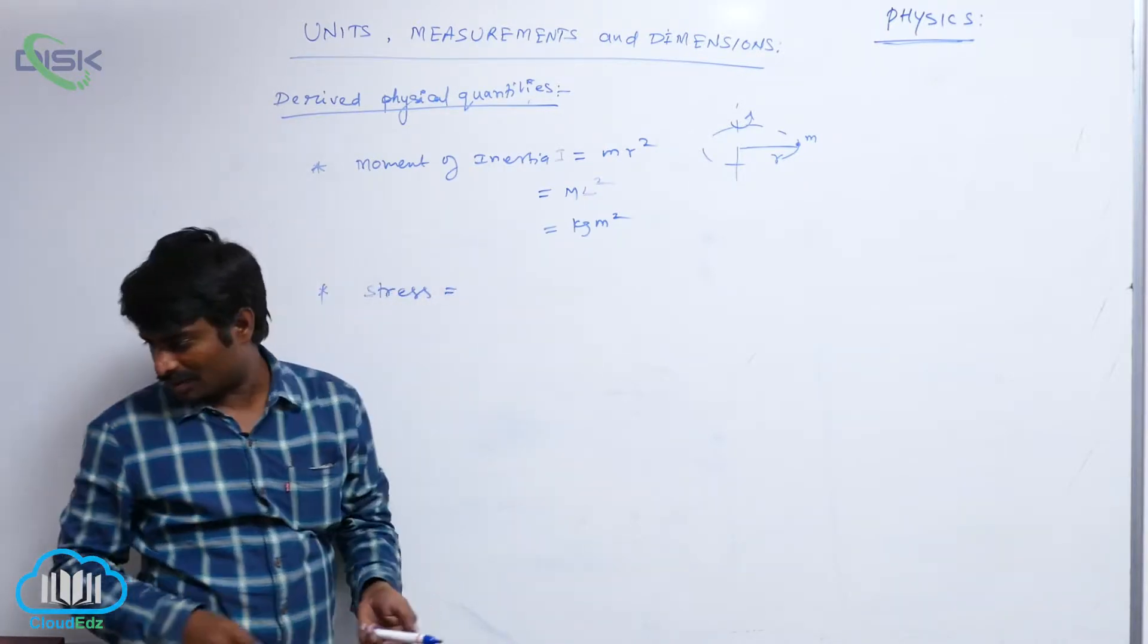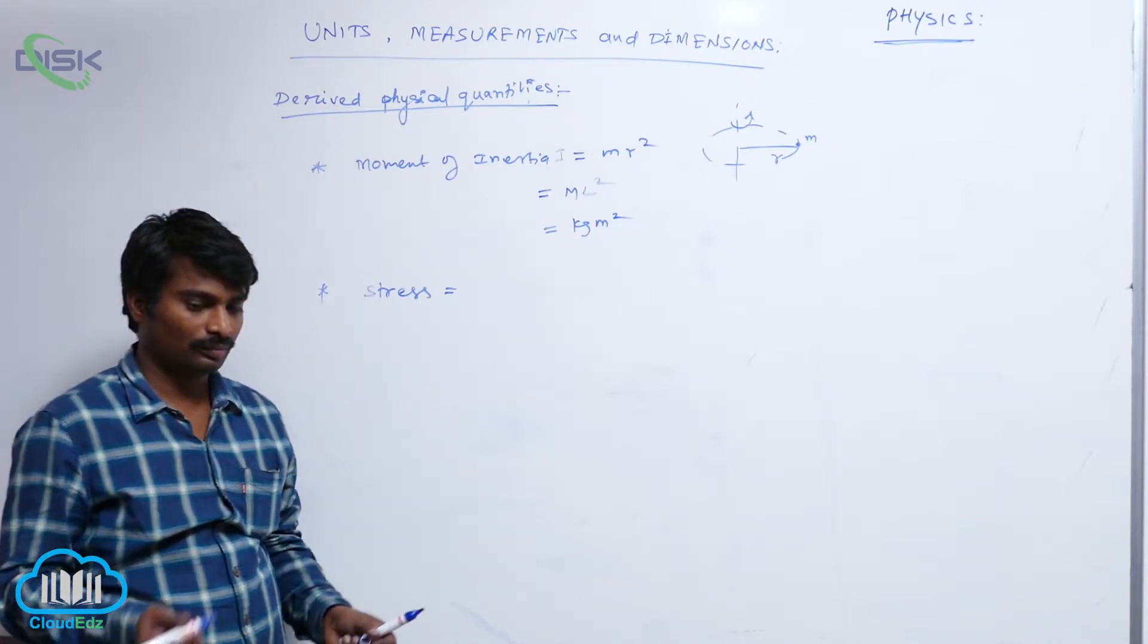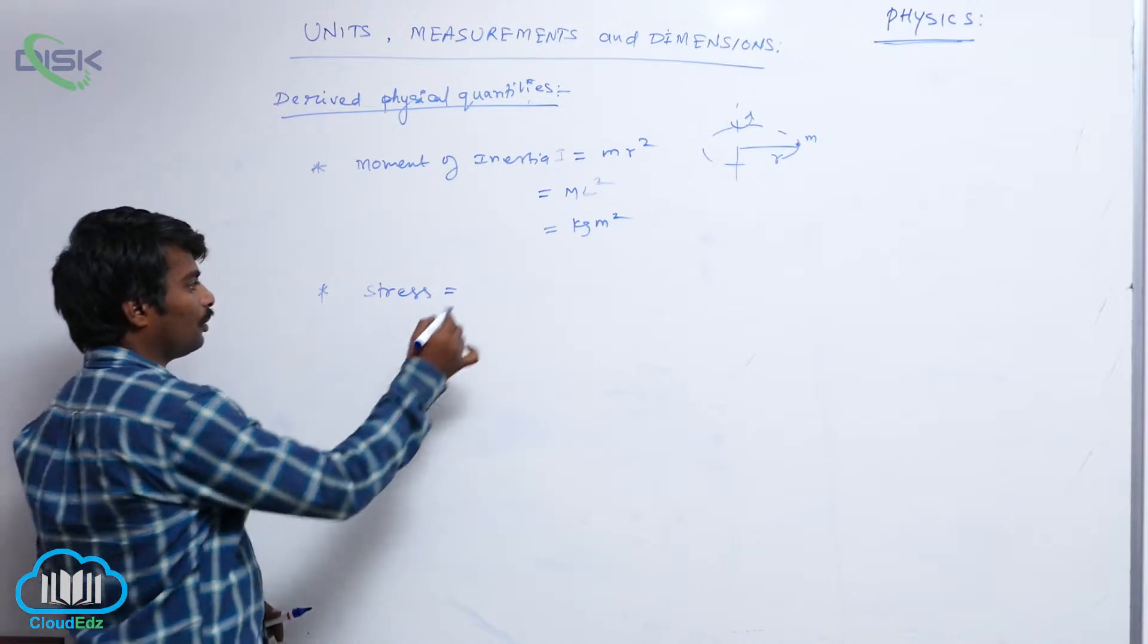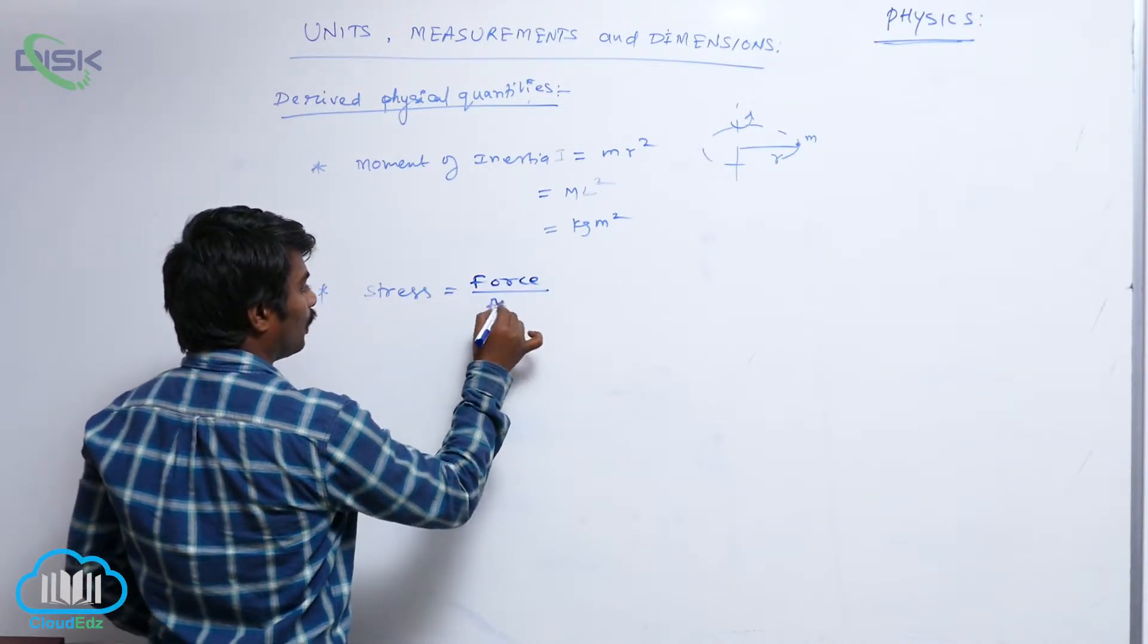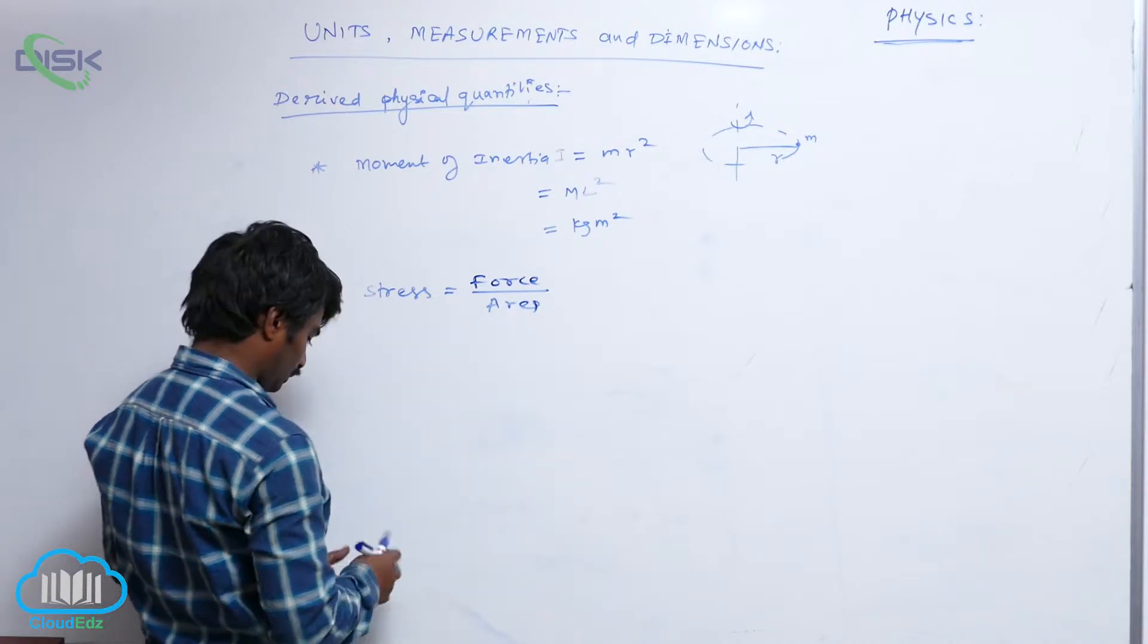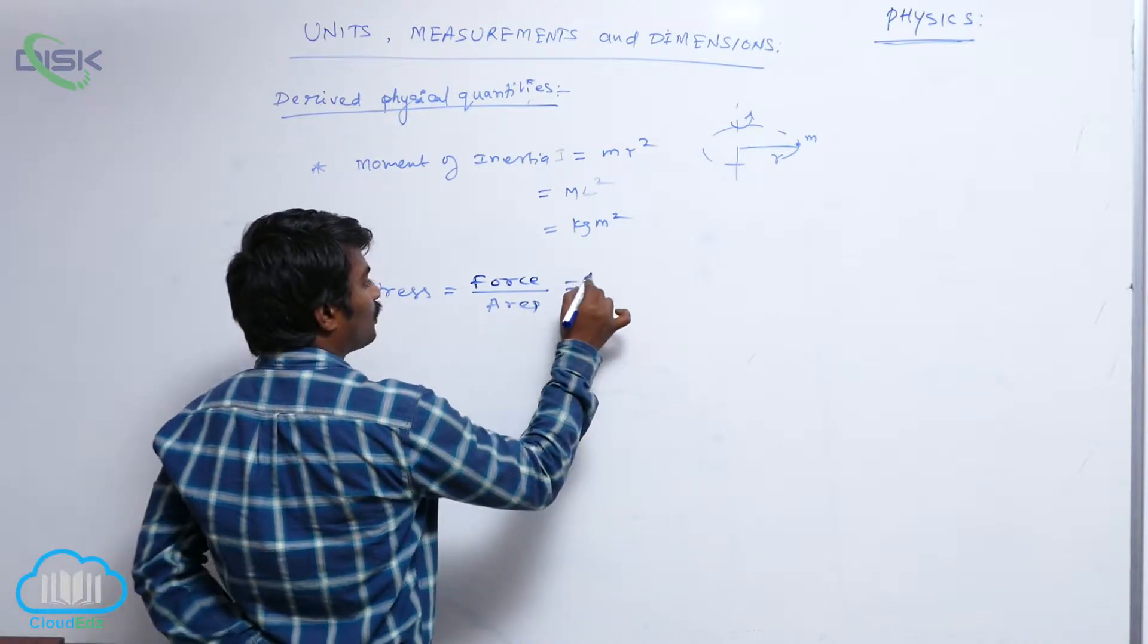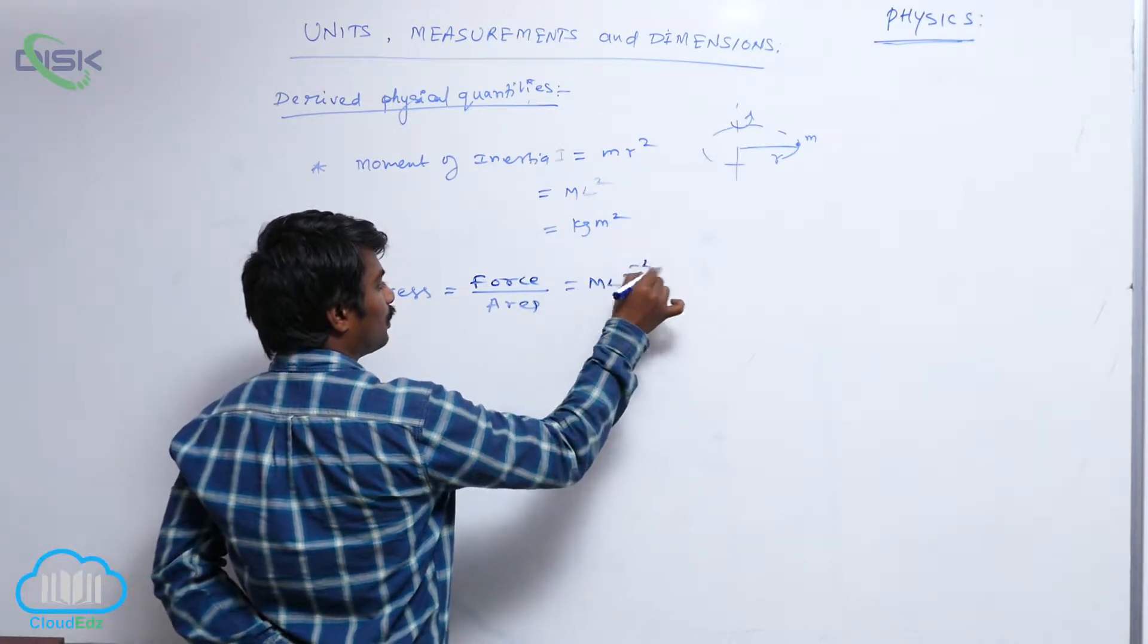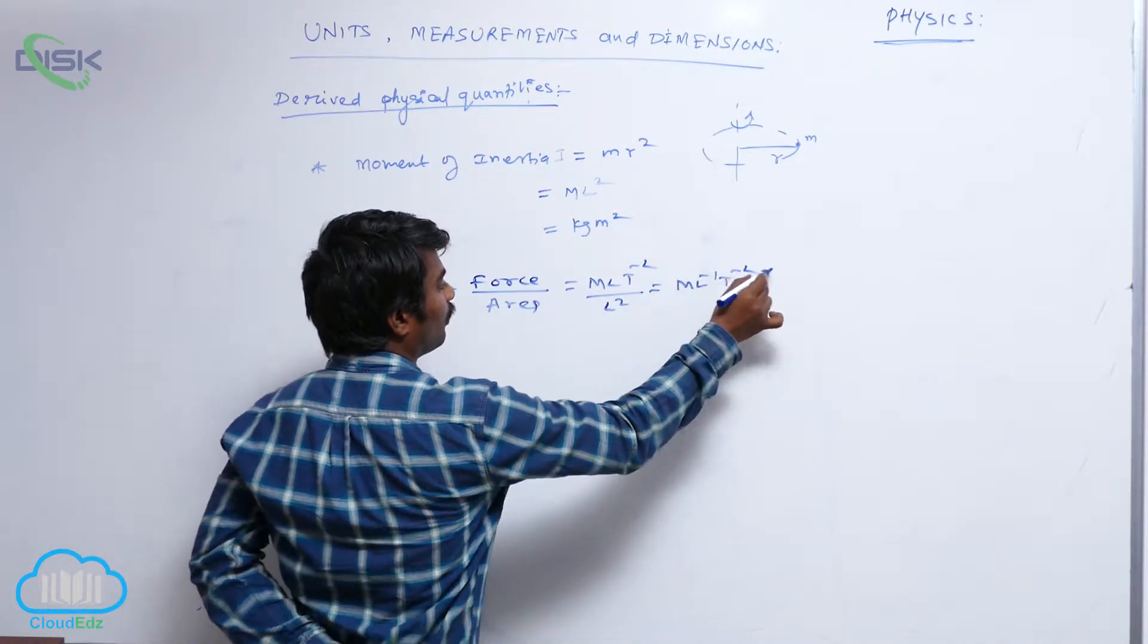Stress is equal to force by area. Force is m l t minus 2 by l square, that is m l minus 1 t minus 2, so newton per meter square is the unit.